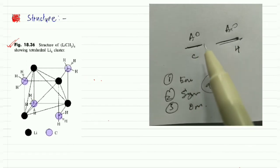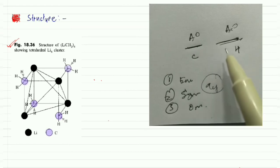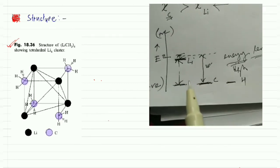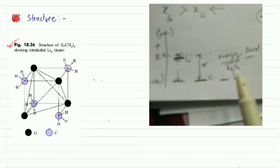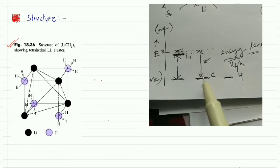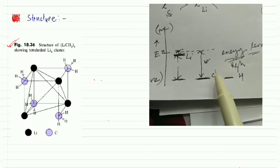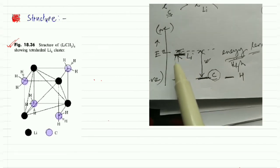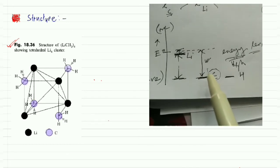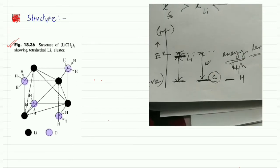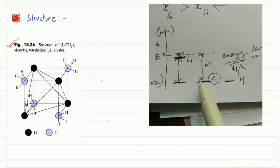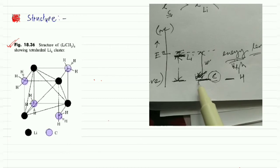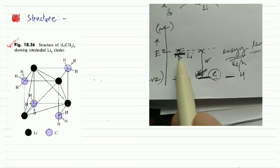The main concept is that carbon and hydrogen have similar energy due to similar electronegativity, so they form a covalent bond by overlapping atomic orbitals. But for lithium and carbon, the electronegativity of carbon is higher than lithium, so they have very different energy levels. Since the energy difference is significant, they will not overlap to form a covalent bond.